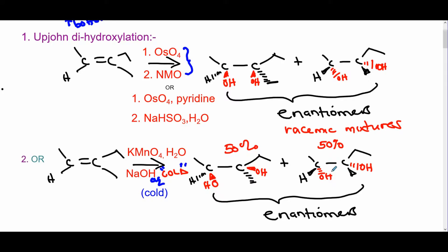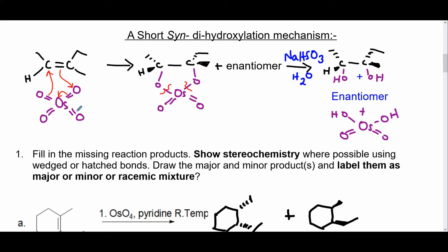Here's a short mechanism involving osmium tetraoxide: the pi bond of an oxygen from OsO4 attacks the sp2 carbon of the alkene, the double bond opens up, and the other oxygen bonded to the osmium metal center attacks the adjacent carbon, forming a five-membered ring intermediate. You get the five-membered ring intermediate plus its enantiomer, because the group can add from the top or bottom. After reduction — for example with sodium hydrogen sulfite — you get the diol product.